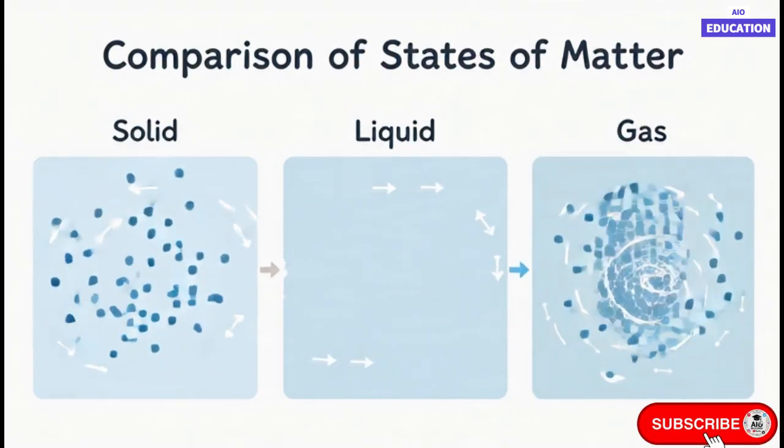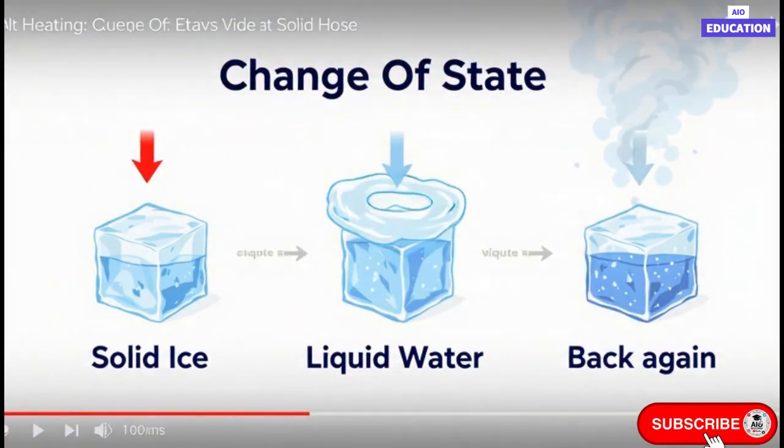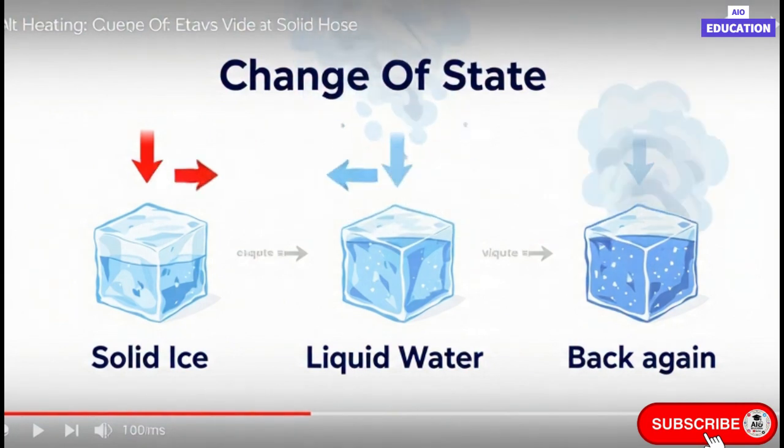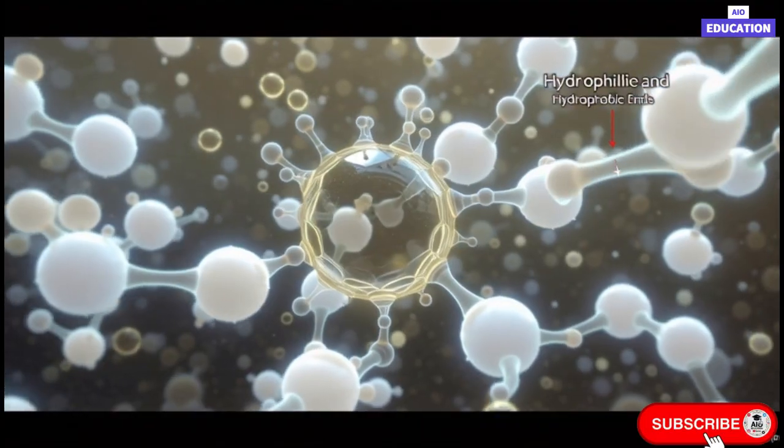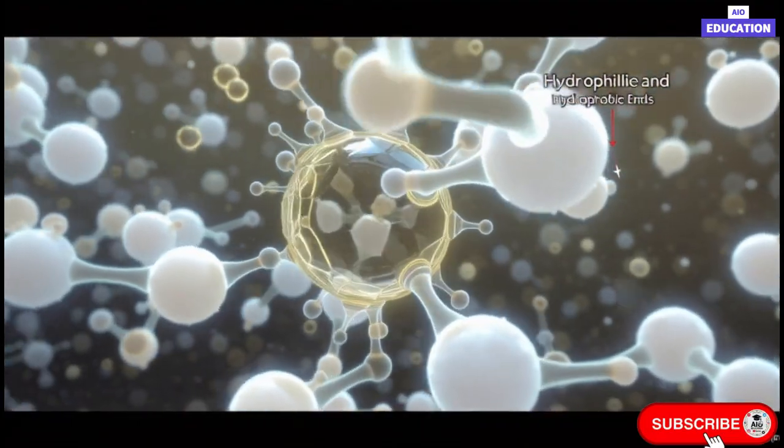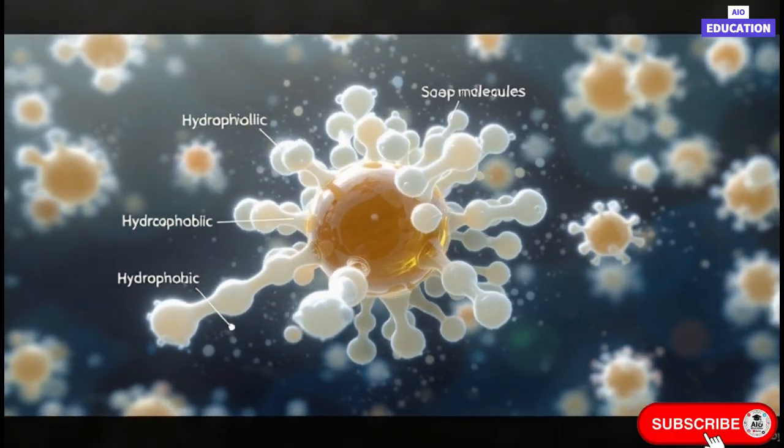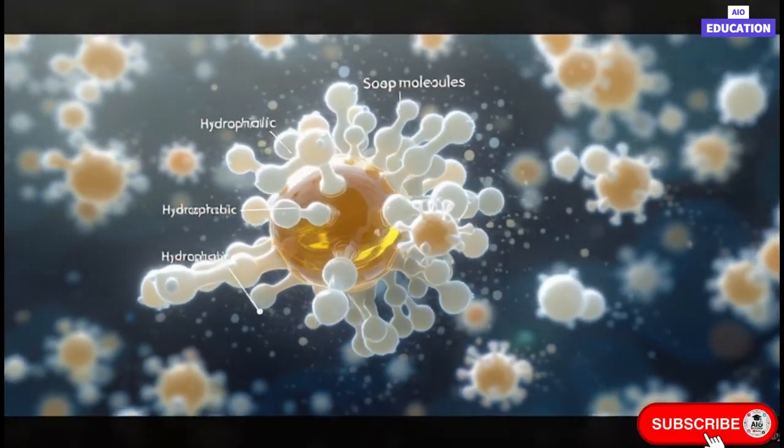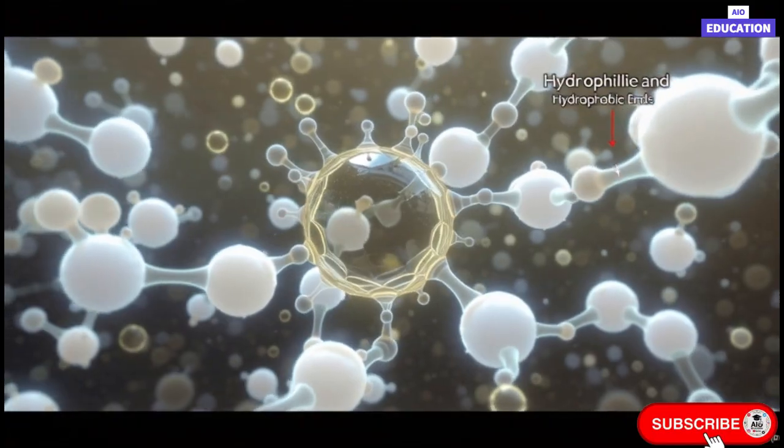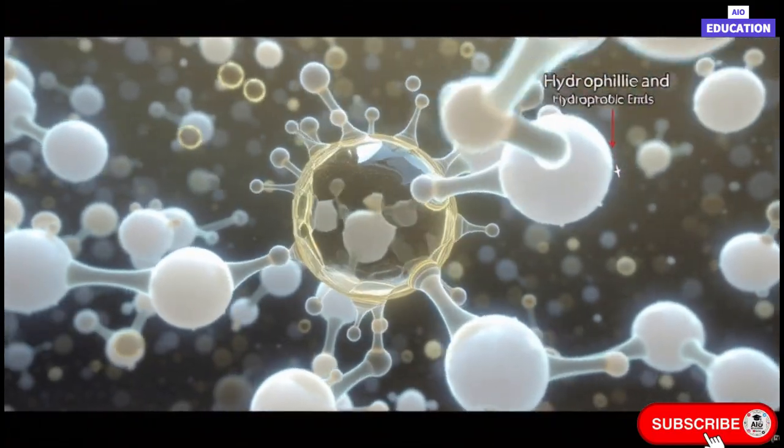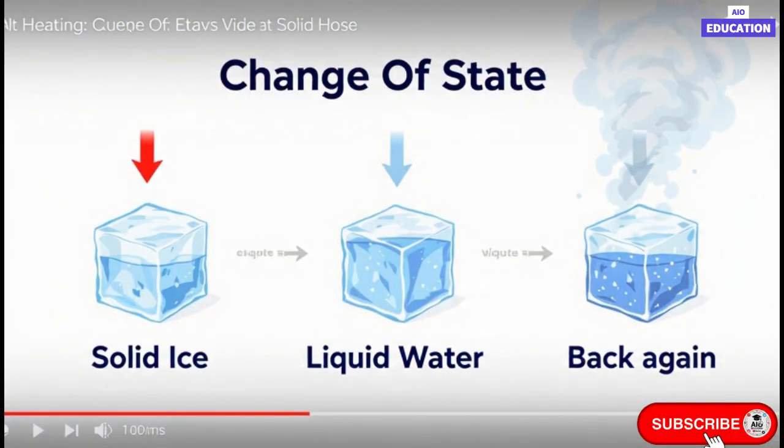Now let's talk about liquids. Liquids do not have a fixed shape, but they have a definite volume. The particles in liquids are not as tightly packed as in solids. They are arranged loosely and can move around each other freely. This is why liquids can flow and take the shape of the container they are poured into. The inter-particle attraction in liquids is moderate, not as strong as in solids, but not as weak as in gases.